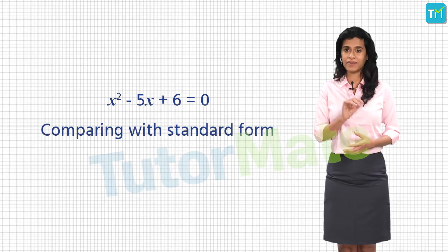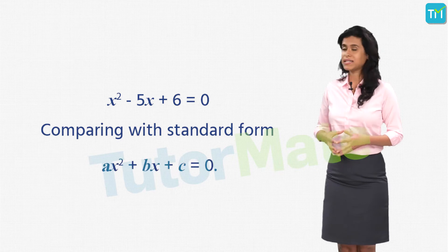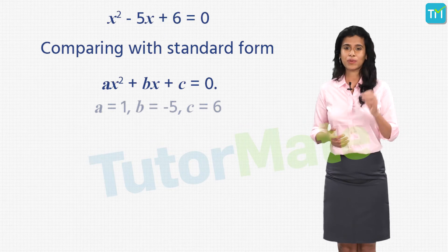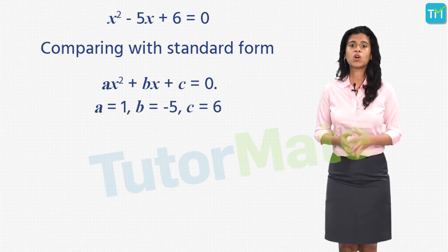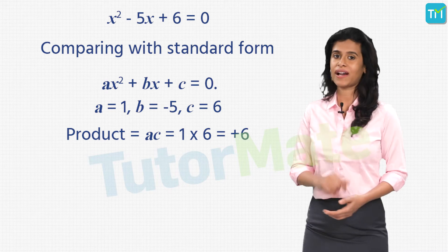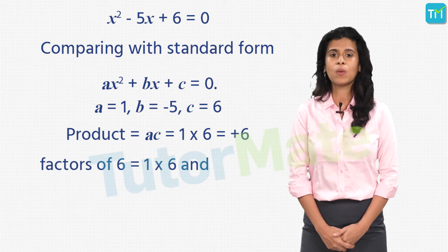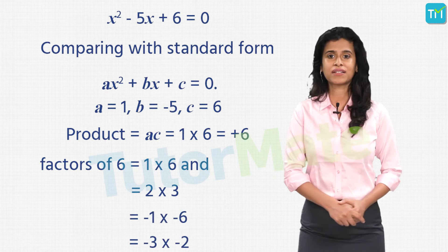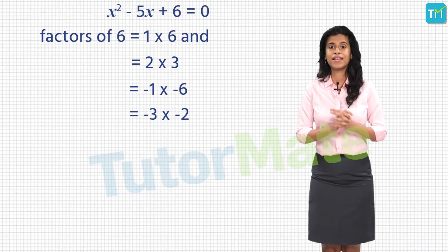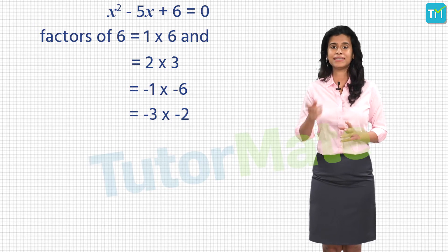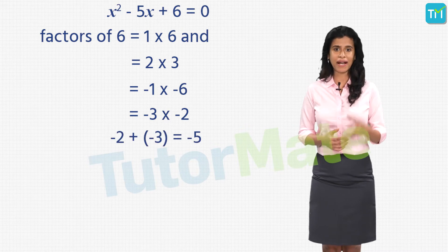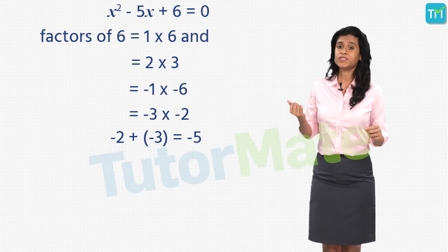Now if we compare our equation with the general equation, we get a equal to 1, b equal to minus 5 and c equal to 6. Next, we find the product of the coefficient of x squared, that is a, and the constant term, that is c. Here we have a times c equal to 1 into 6 which is equal to 6. Now we will factorize 6. The factors of 6 are 1 into 6 and 2 into 3, while the negative factors are minus 1 into minus 6 and minus 2 into minus 3. We have to choose a pair of factors such that their sum is equal to the coefficient of the middle term, that is minus 5. If we consider the pair of factors as minus 2 and minus 3, we get minus 2 plus minus 3 equal to minus 5, which is the coefficient of the middle term.